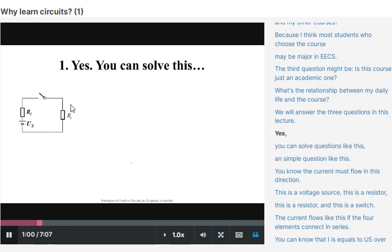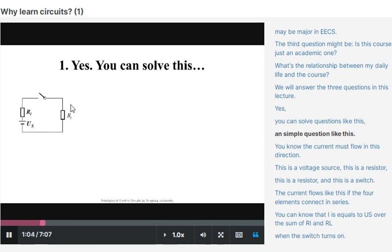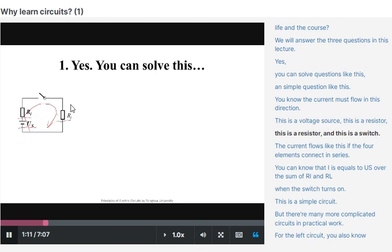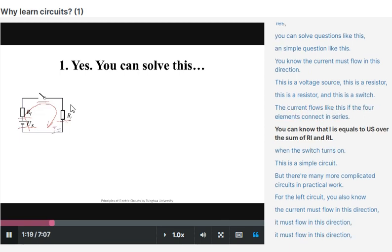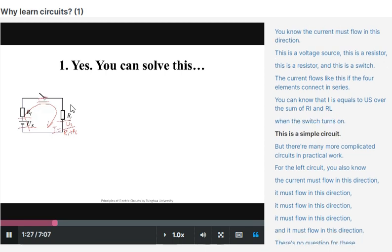Yes, you can solve questions like this, a simple question like this. You know the current must flow in this direction. This is the voltage source, this is the resistor, this is the resistor, and this is the switch. The current flows like this if the four elements connect in series. You can know that it is equal to US over the sum of RI and RL when the switch turns on. This is a simple circuit.